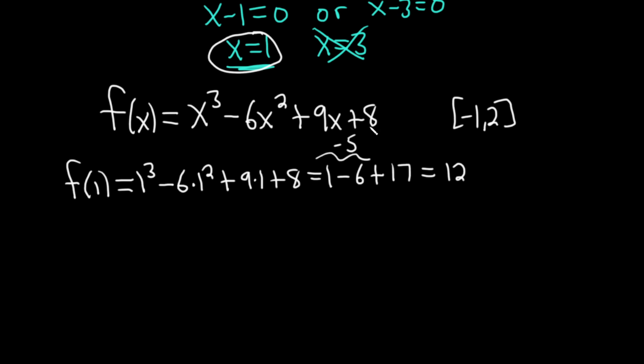Let's check -1 now, our first endpoint. f(-1) = (-1)³ - 6(-1)² + 9(-1) + 8. Negative 1 cubed is -1 because -1 to an odd power is negative. (-1)² is 1, so we get -6(1) = -6.